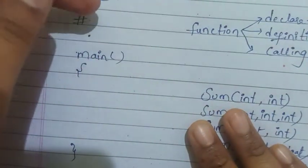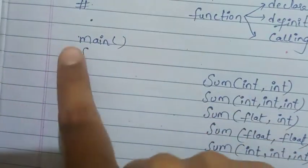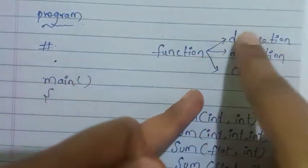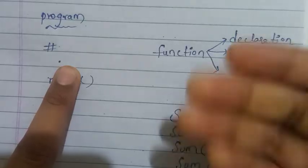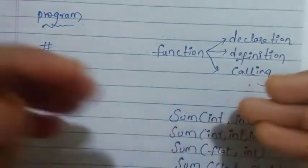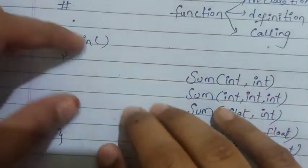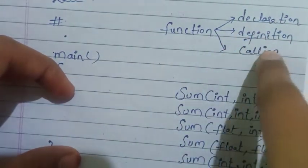If you want to write the program, first use hash include iostream header file. Then the main function opens, and inside the main function we write statements. Basically, a function in the program involves three parts: function declaration, function definition, and function calling. For example, a sum function is first declared, then defined, then called inside main.